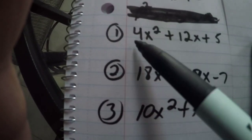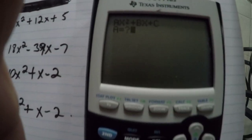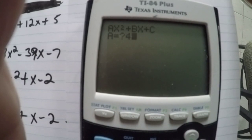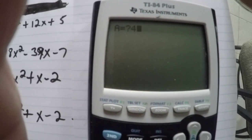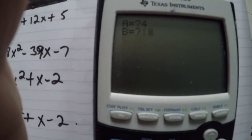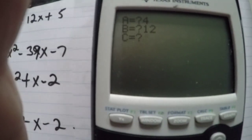So now I will go back on my calculator. The first one is 4. So on my calculator I write 4. Now the next is B. B will be 12. Next one is 5. So C will be 5.